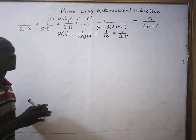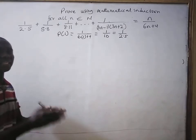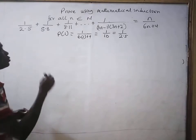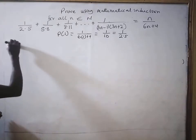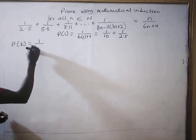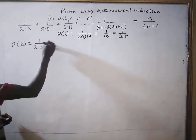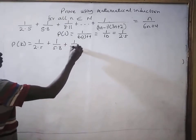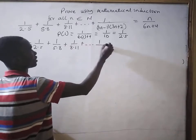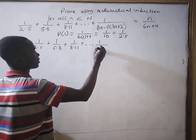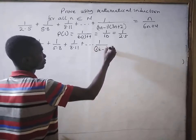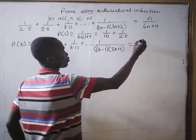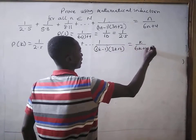Now we move to the inductive hypothesis step. We assume that P(n) is true for all n in the subset of natural numbers. So if we take n to be k, we have P(k) equals 1 divided by (2 times 5) plus 1 divided by (5 times 8) plus 1 divided by (8 times 11) plus dot dot dot plus 1 divided by (3k minus 1)(3k plus 2), and this is equal to k divided by (6k plus 4).